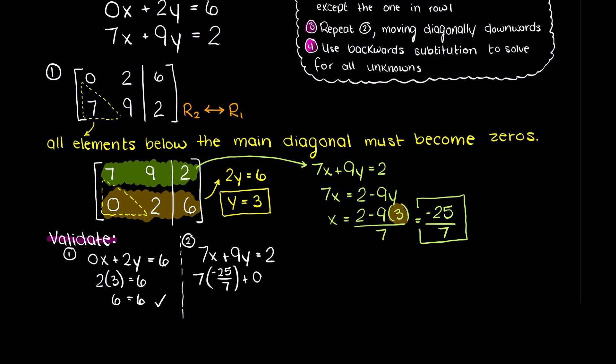Secondly, we have 7 times minus 25 over 7 plus 9 times 3 equals 2. This works out to minus 25 plus 27, which does equal 2. Therefore, our newly found variables are proper solutions to both of our initial equations.